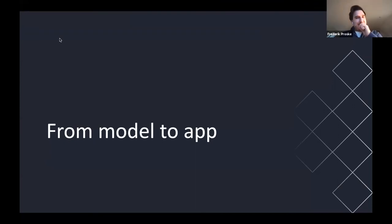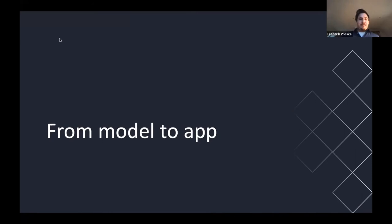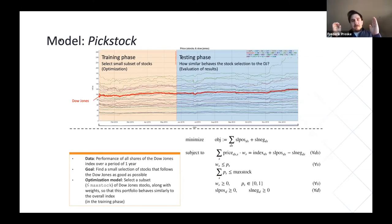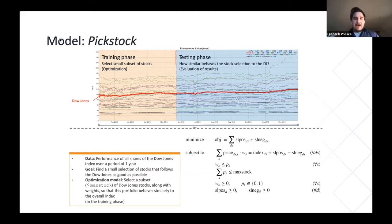Now I want to bring a different model into play to make things more interesting. The second part of my presentation deals with a model from the finance sector called pickstock. The basic idea is that we have data from a given time period for the 30 stocks in the Dow Jones index, and our problem is to create an index fund using a subset of these 30 stocks. We define how many stocks our model is allowed to pick, and our objective is for the index fund to follow the Dow Jones as closely as possible.